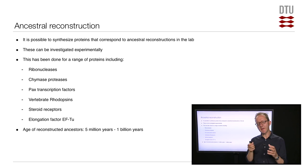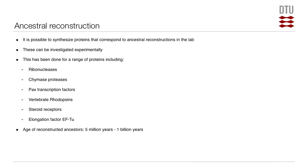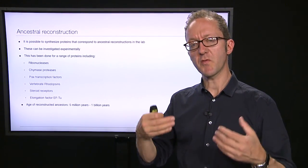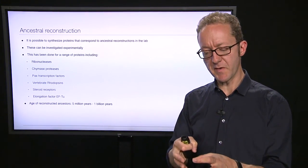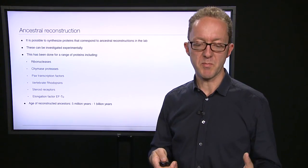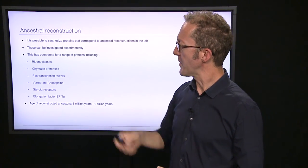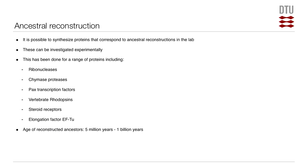People have been doing that, and not just in silico — not just at the sequence level. Some people have actually gone ahead and synthesized the corresponding proteins in the lab. First you reconstruct the DNA sequence, from which you can express the corresponding protein, purify it in the lab, and have in your Eppendorf tube some of that particular protein. You can then do experiments on a protein that, with some probability, corresponded to a protein that existed maybe millions or even billions of years ago. Examples include ribonucleases, chymase proteases, PACT transcription factors, vertebrate rhodopsins, steroid receptors, and the elongation factor EF-Tu.